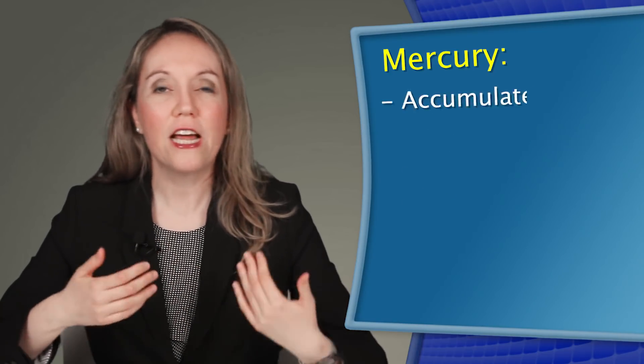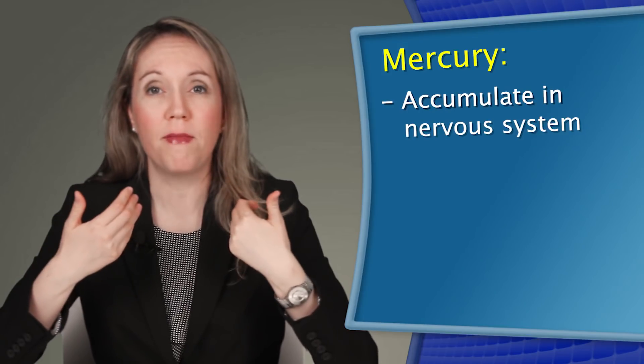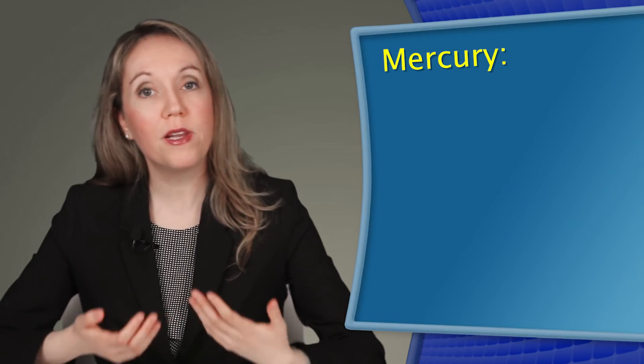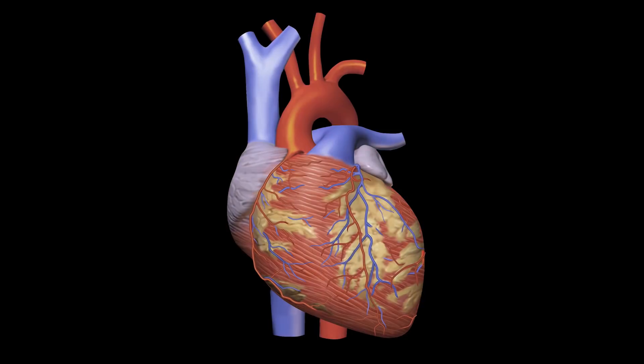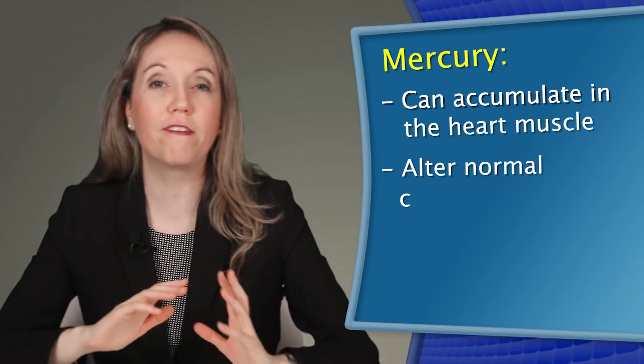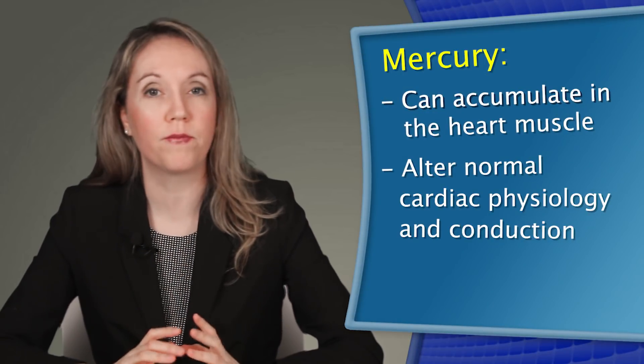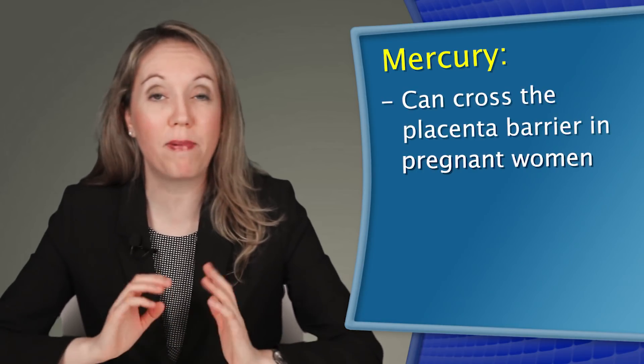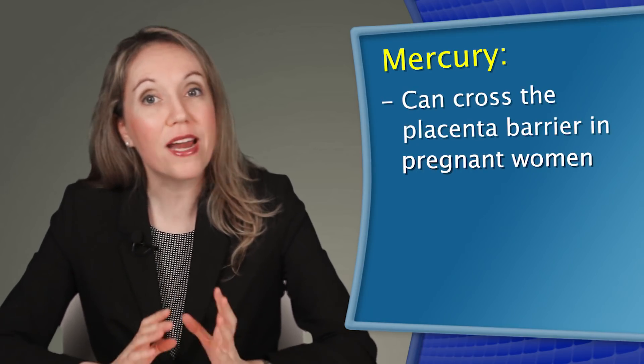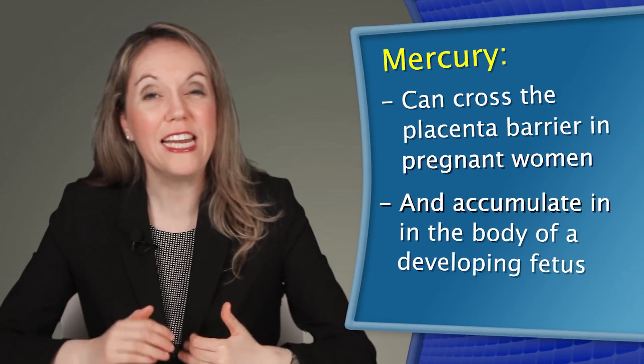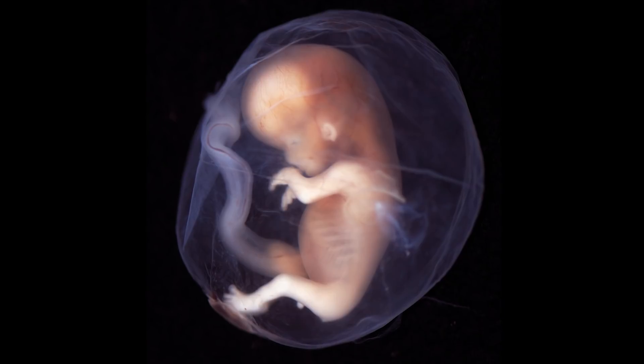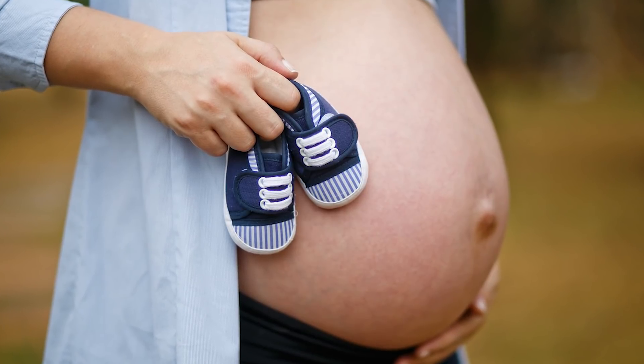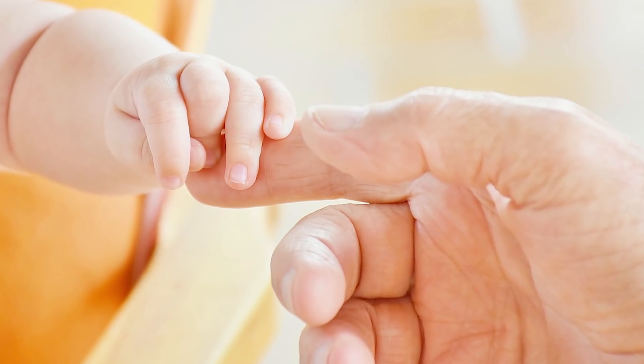For example, it can accumulate in our nervous system and cause a wide variety of neurologic problems, or it can accumulate in the heart, in the actual heart muscle, and alter the normal cardiac physiology and conduction. And another highly concerning issue is that mercury can also cross the placenta barrier in pregnant women and accumulate in the body of a developing fetus, causing nervous system damage or other problems in an unborn baby before it's even born.